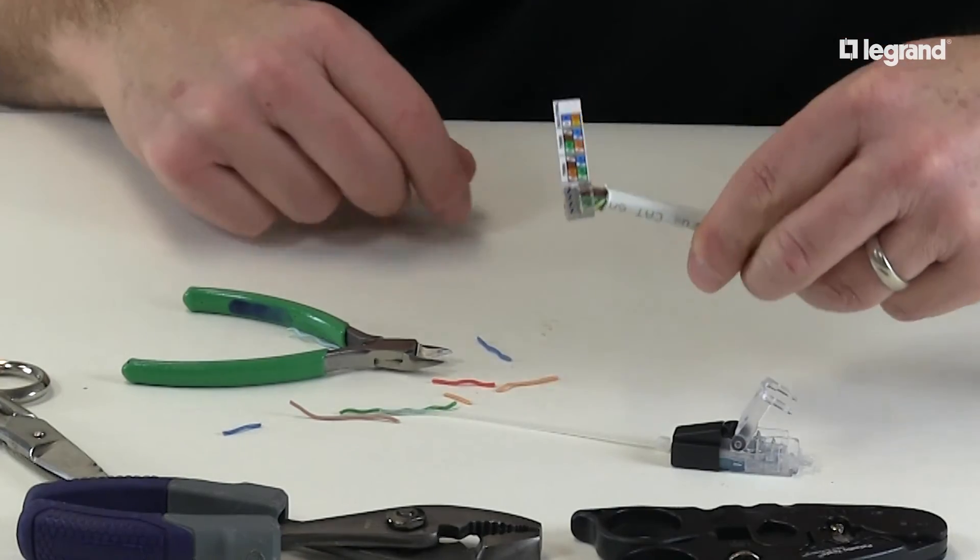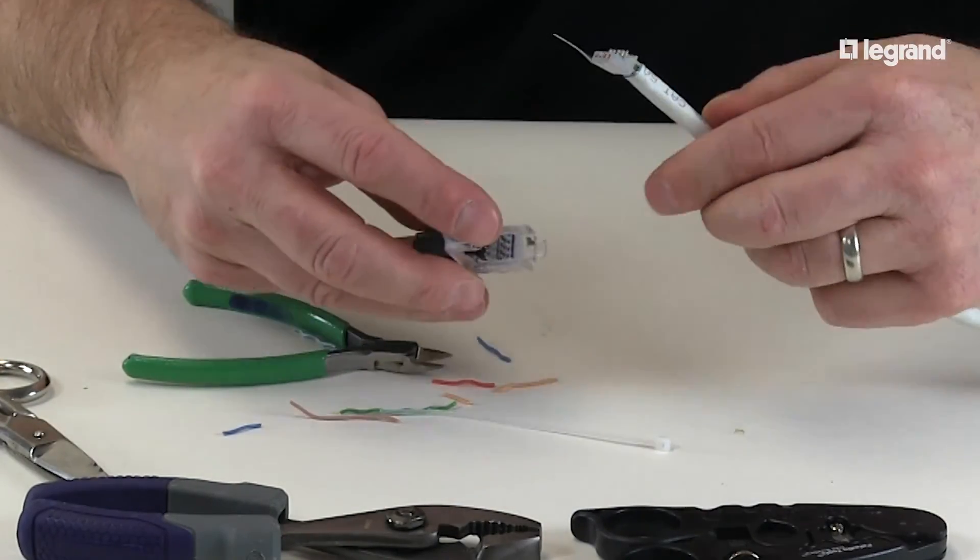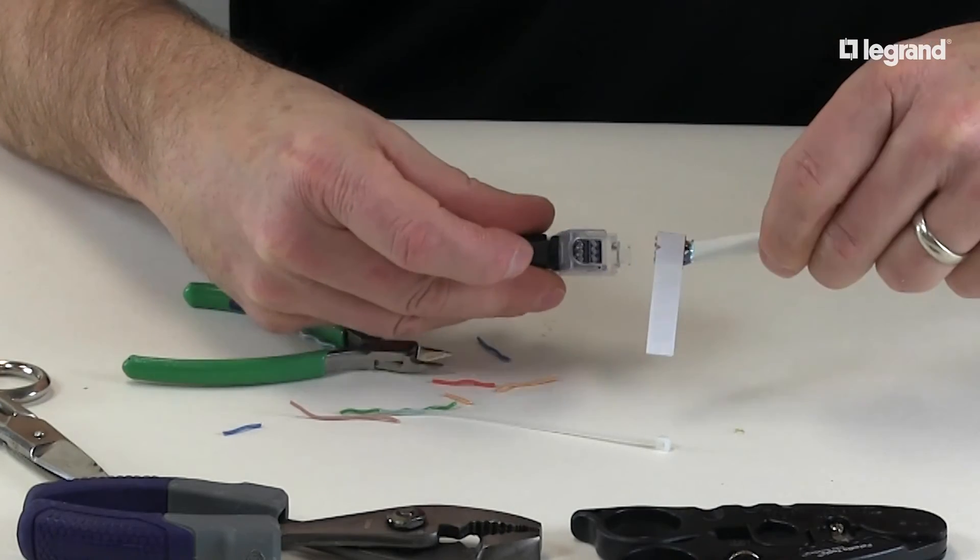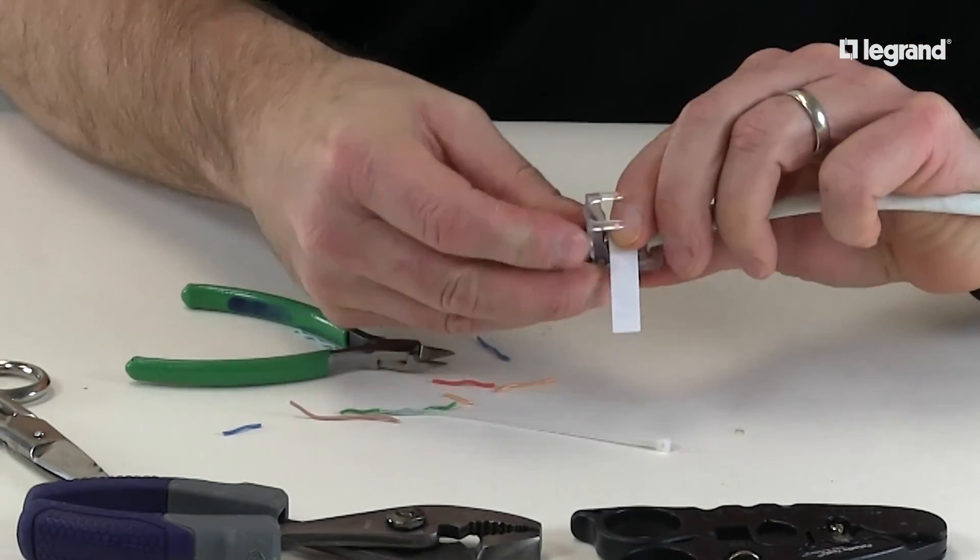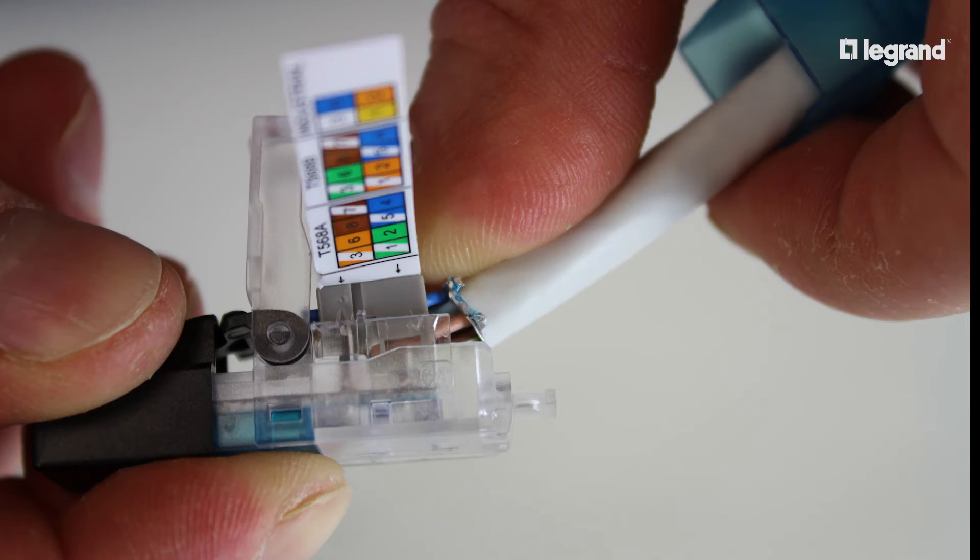Now you're ready to start the final steps of the termination. Rotate the conductor assembly into position with the wiring cap label facing down. Ensure that the small cutout on the side of the wiring cap aligns with the notch in the plug's body.